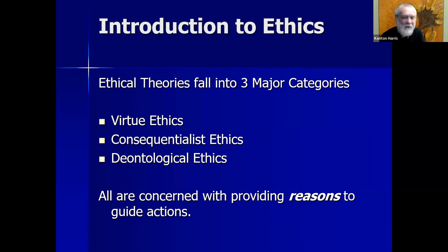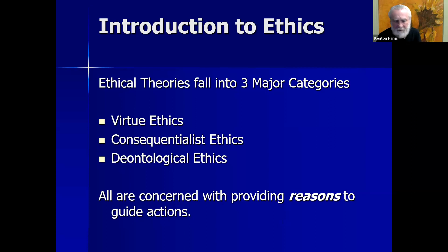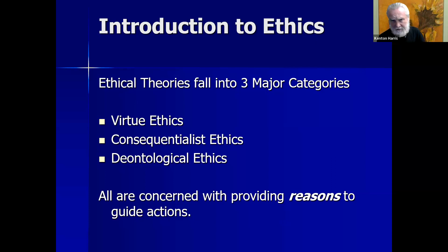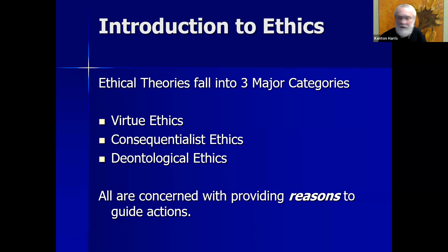Ethical theories fall into three major categories: virtue ethics, consequentialist ethics, and deontological ethics. If you were going to file the various ethical theories of Western philosophy, you would basically just need three file folders labeled accordingly. All three are concerned with providing reasons, but they differ as to what reasons they consider relevant to guiding your actions.